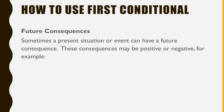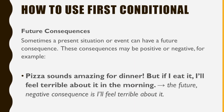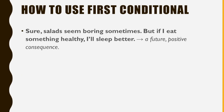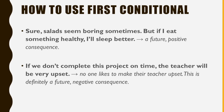Future consequences. Sometimes a present situation or event can have a future consequence. These consequences may be positive or negative. For example, pizza sounds amazing for dinner, but if I eat it, I'll feel terrible about it in the morning — that's a future negative consequence. Salads seem boring sometimes, but if I eat something healthy, I'll sleep better — a future positive consequence. If we don't complete this project on time, the teacher will be very upset — definitely a future negative consequence.